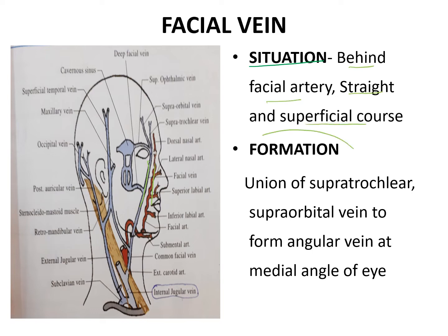Now we will see about the formation of the facial vein. There are two veins — the supraorbital vein and the supratrochlear vein — that join at the medial angle of the eye to form the angular vein. So the facial vein is formed by the union of the supratrochlear and supraorbital veins, forming the angular vein at the medial angle of the eye.